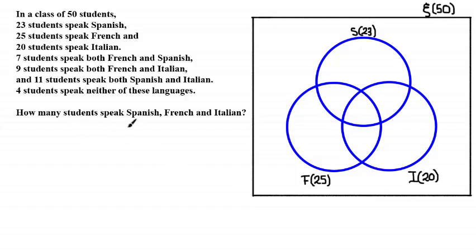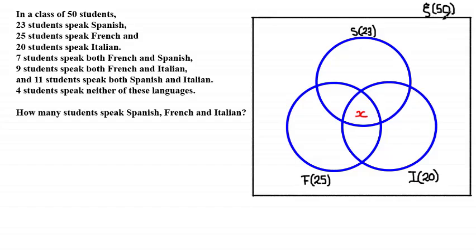We've been asked to find how many students speak Spanish, French, and Italian — represented by the central intersection of the Venn diagram. Since we don't know it, we let X be that number. Our objective is to find X by working outward and completing the Venn diagram algebraically, using the fact that the sum of all elements must equal the universal set of 50.